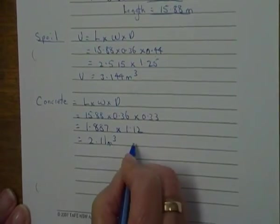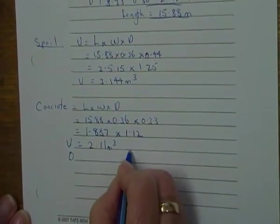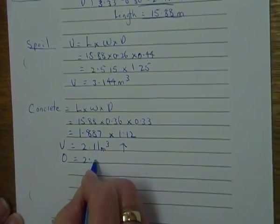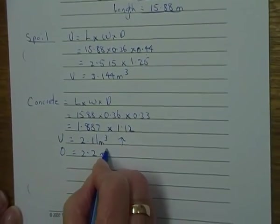Now, this isn't my order, that's my volume. Remember, you've got to round up in increments of 0.2, so it's going to be 2.2 metres cubed.